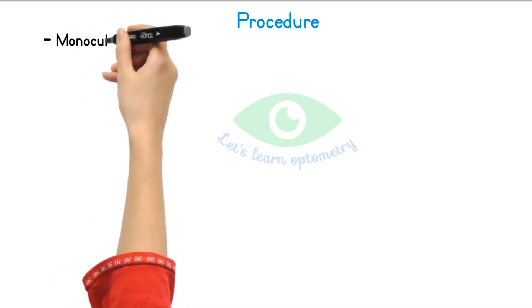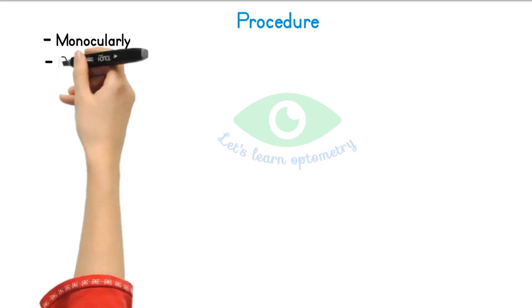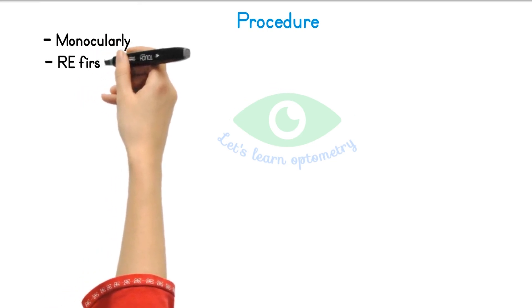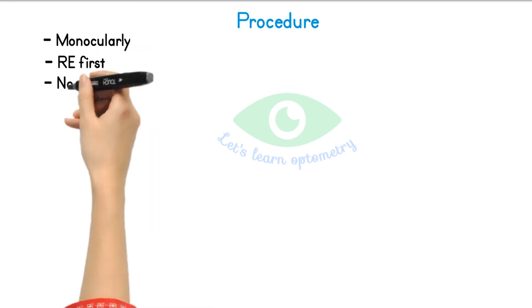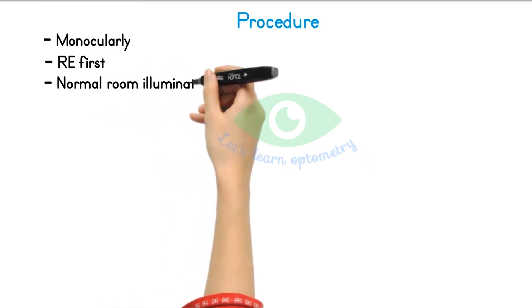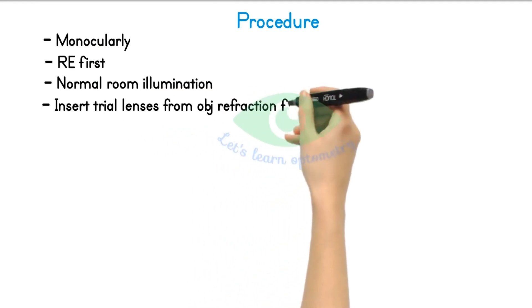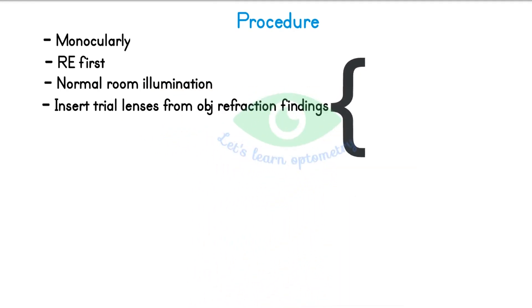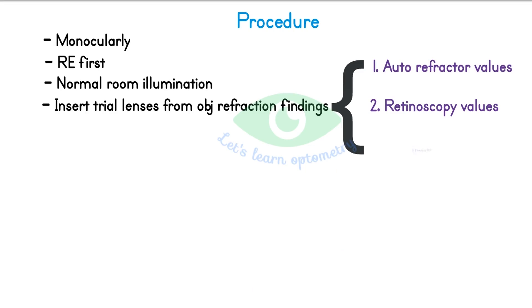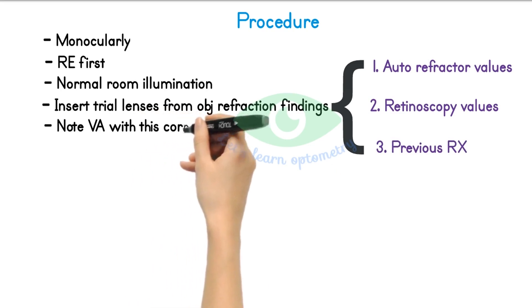This video concentrates on fogging done in subjective refraction to achieve maximum plus for maximum visual acuity. This procedure is carried out monocularly with the other eye being occluded. By convention, the right eye is done first, followed by the left eye, in normal room illumination. Begin by inserting the trial lenses from objective refraction findings — this could be based on net retinoscopy result, autorefractometry result, or their former spectacle or contact lens prescription. The patient's visual acuity is noted immediately after this step.